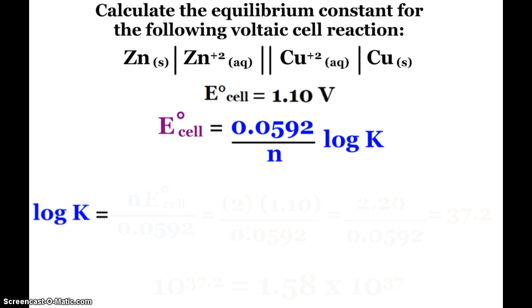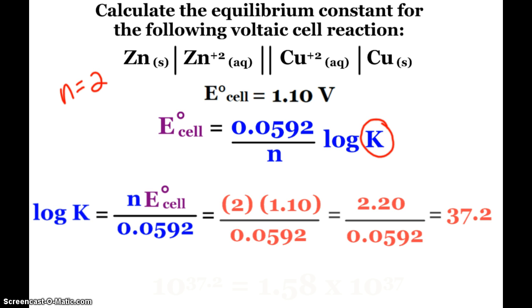But for right now, calculate the equilibrium constant for this voltaic cell. It's our zinc-copper cell. We've got a 1.10 voltage. There's my equation. I know that my N is 2 for this reaction. I want to find the equilibrium constant. So, I'm going to rearrange that equation, and the log of K is equal to N times my E naught cell divided by 0.0592. When I plug in that information, I end up with an answer of 37.2.